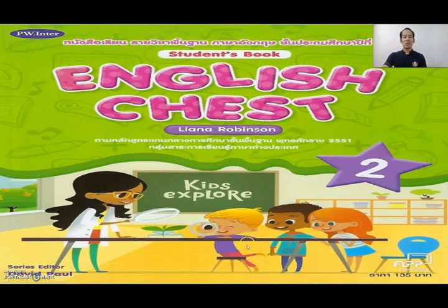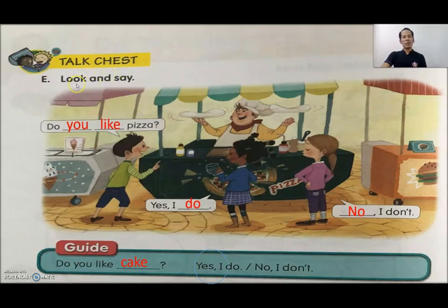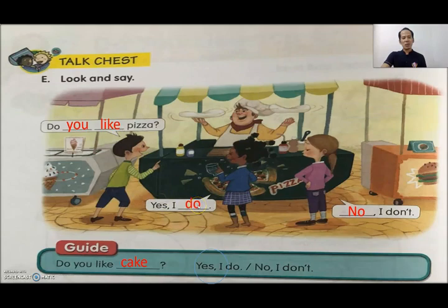Let's go to your Student Book, Letter E, Page 20. Look and say. Do you like pizza? Yes. Do you like pizza? Write this: Do you like...? Yes, I do.